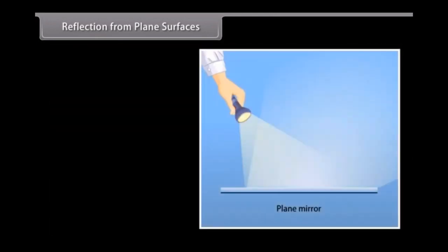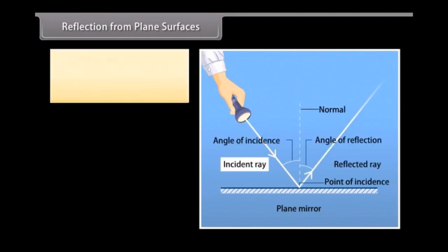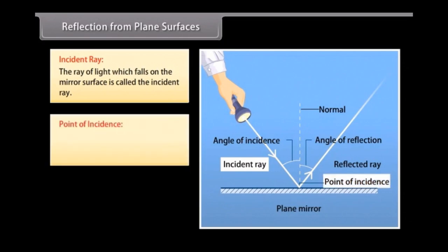Meaning of important terms. To understand the figure: incident ray is the ray of light which falls on the mirror surface. Point of incidence is the point at which the incident ray falls on the mirror.